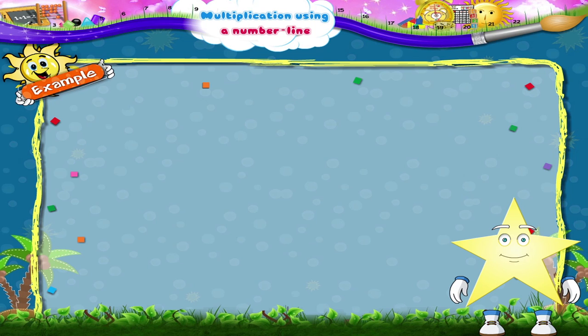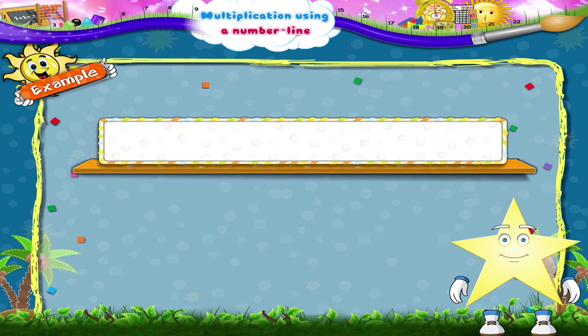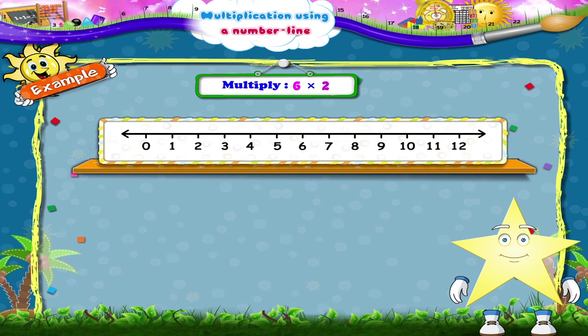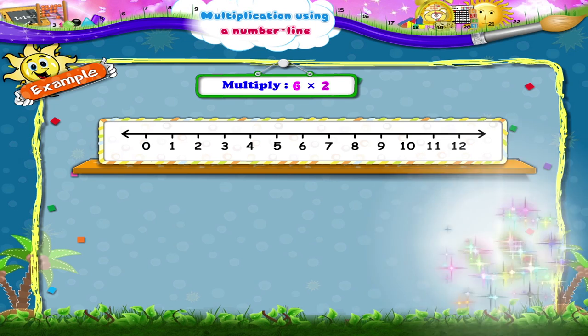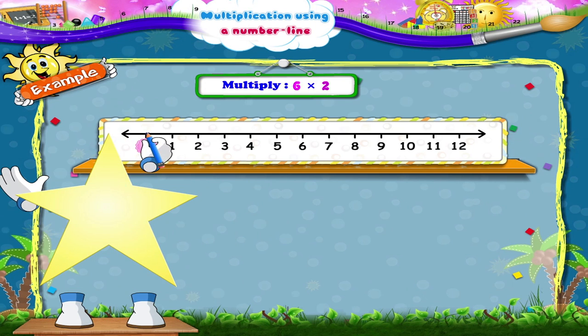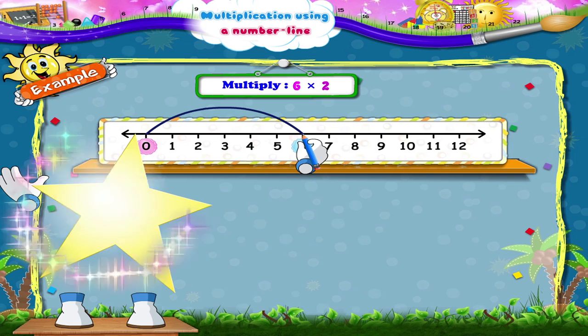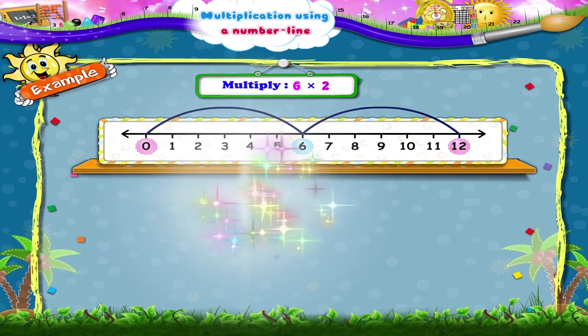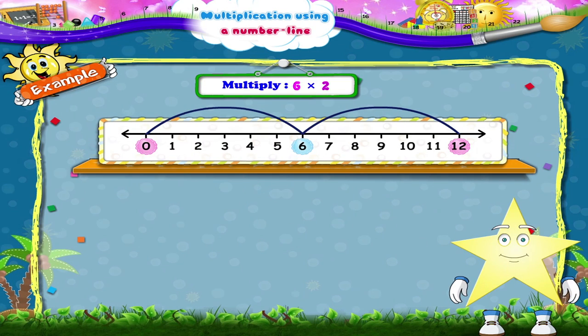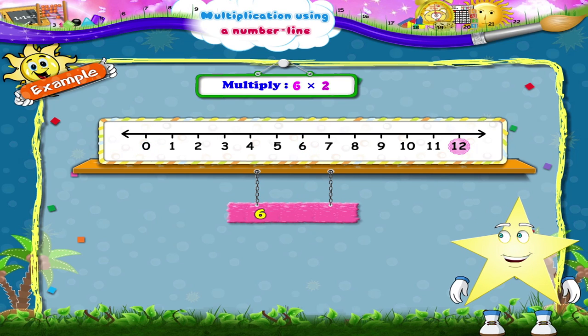Let us solve one more example. How much is six multiplied by two, Starry? We shall start from zero. Take two jumps of sixes to the right. What is the answer Starry? Yes, six multiplied by two is twelve.